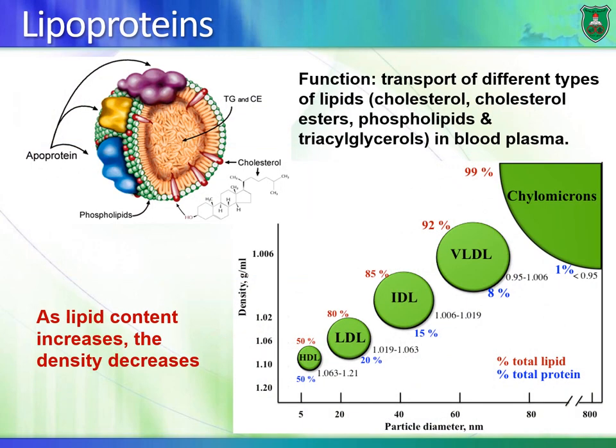Cholesterol and other lipids like triacylglycerols, when we eat them, are absorbed by intestinal cells, get into the blood system, and travel to be stored in the liver or adipose tissues. They can also leave adipose tissues into the blood and travel to peripheral tissues. However, these lipids are hydrophobic and cannot be dissolved in blood — so how are they carried? They are carried by molecules known as lipoproteins.